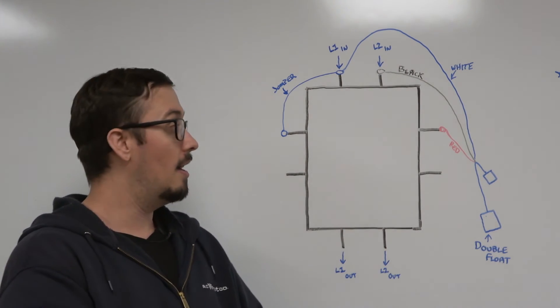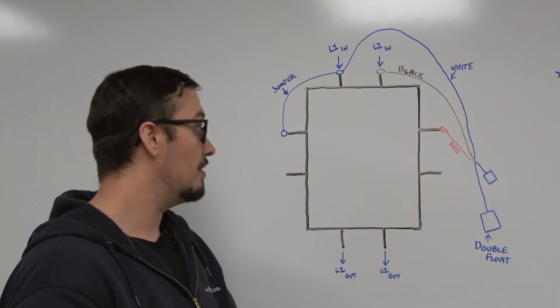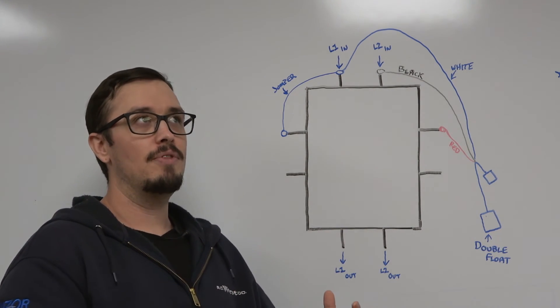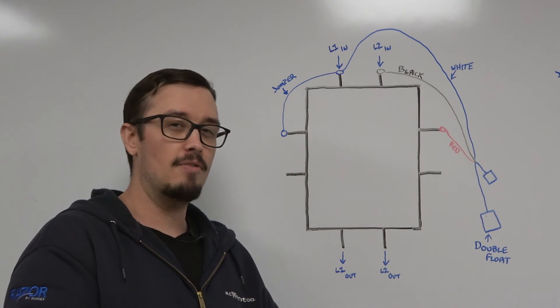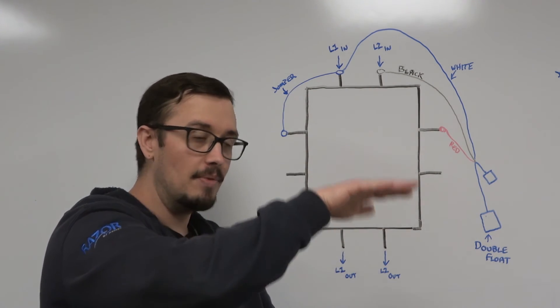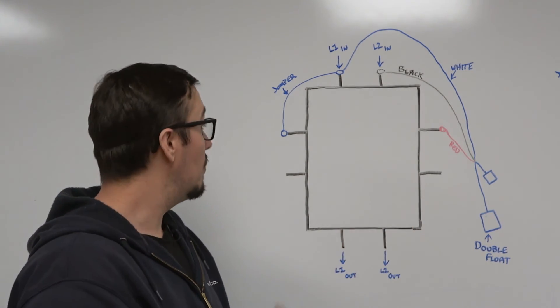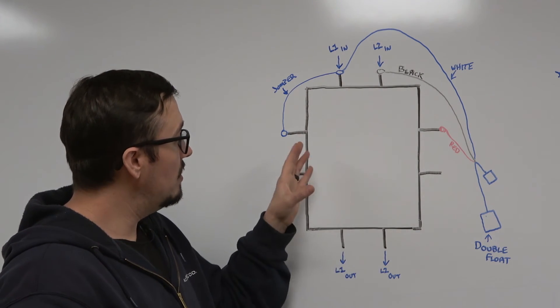This creates the holding circuit in the double float switch, allowing it to operate. Briefly, double float switches are often employed in scenarios where you need to have a wider range of pumping.